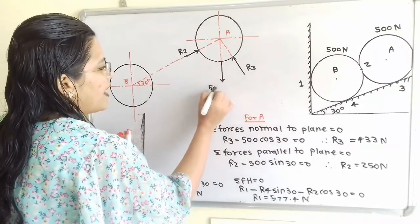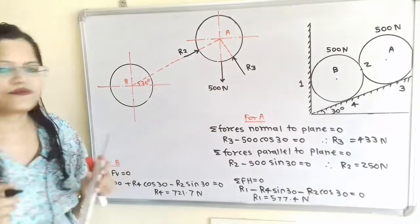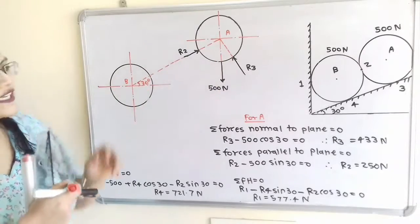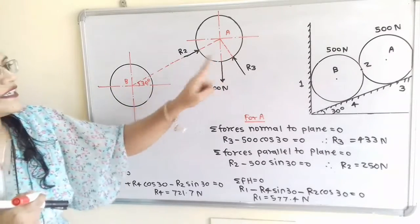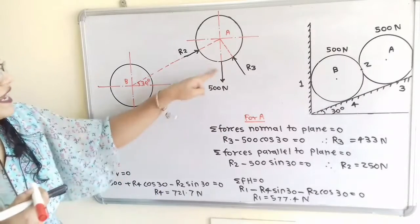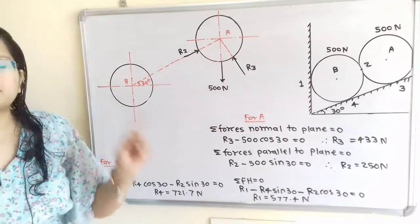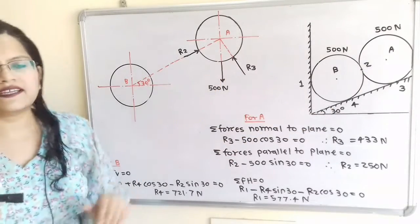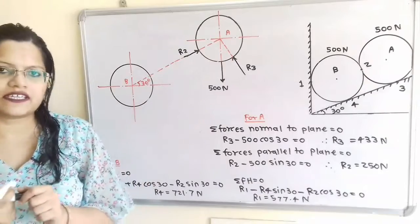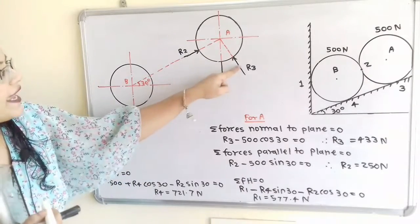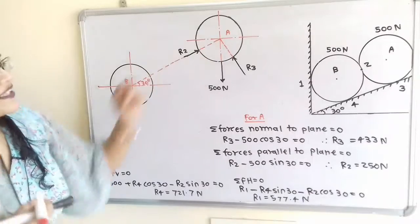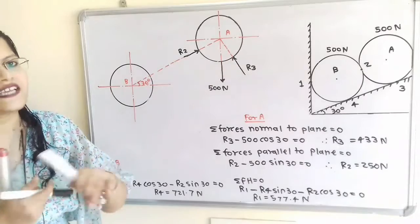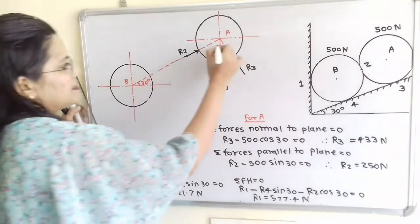We will find the angle made by R3 with the vertical line. R3 is perpendicular to the inclined surface and the vertical line is perpendicular to the horizontal line. Since the horizontal line and inclined surface make an angle of 30 degrees, when these two lines are extended they meet at point A. These two perpendicular lines also make the same angle of 30 degrees with each other.